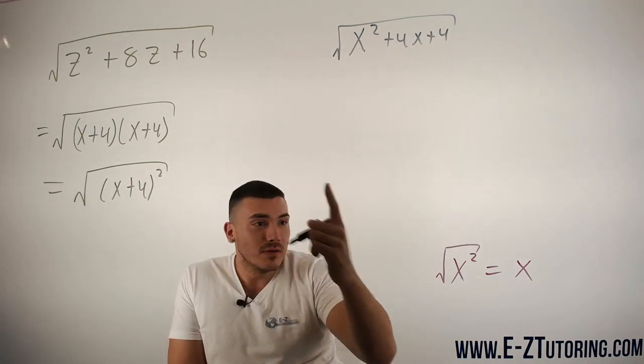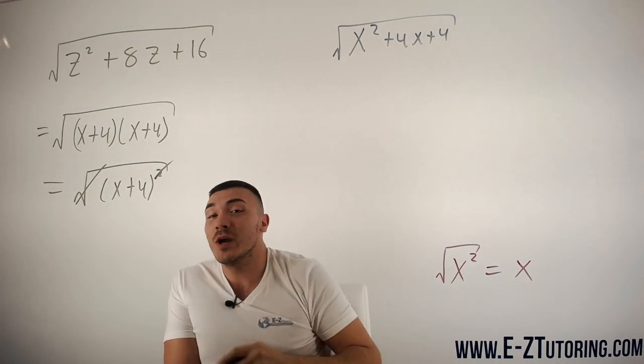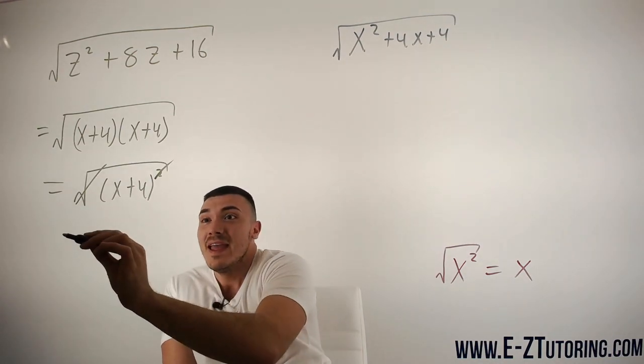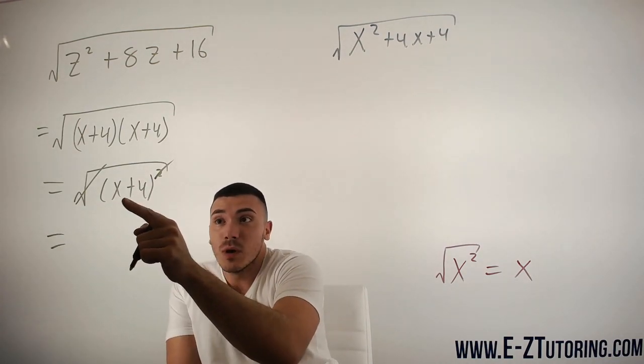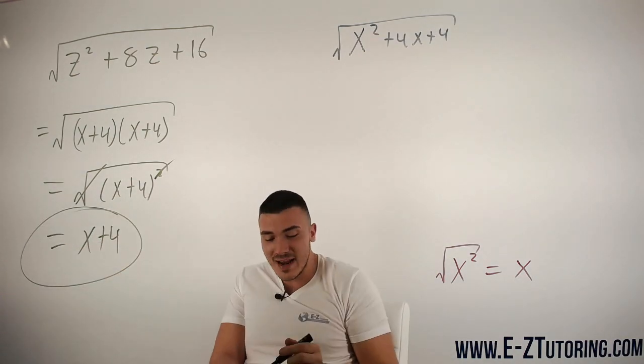So now check it out. Square root, square. Square root, square. We know that a square root and a square will always cancel each other out and we will be left with whatever was squared. Whatever is inside the parentheses, x plus 4. That is your answer. That's how you do it.